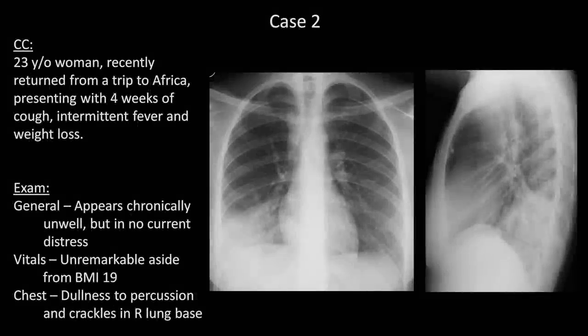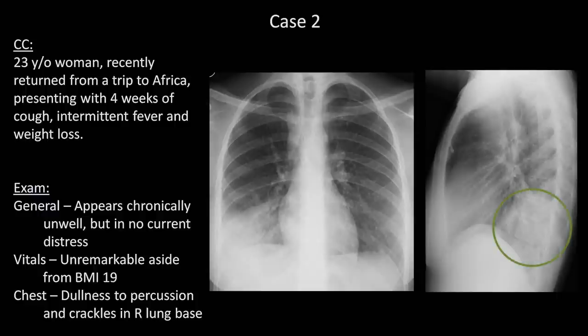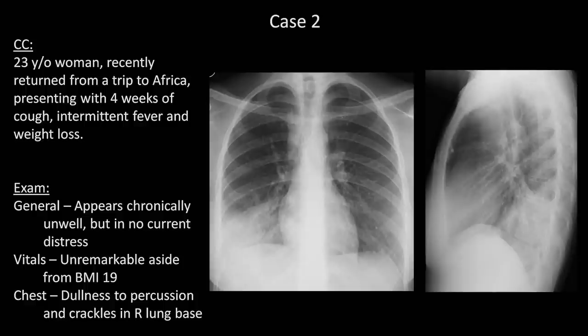Case 2. A 23-year-old woman, recently returned from a trip to Africa, presents with 4 weeks of cough, intermittent fever, and weight loss. The first thing you probably noticed was the dense opacification of the right lower lung field on the PA film. Examining the lateral film, we see that the patient has an opacity in the inferior posterior part of the lung, thus in the right lower lobe. This is a great example of the spine sign, in which there is an interruption in the normal progression to increasing lucency as one moves inferiorly down the spine on the lateral film. In addition, this opacity is well defined and dense enough to be referred to as a consolidation. On the PA film, you may be able to make out an air bronchogram.